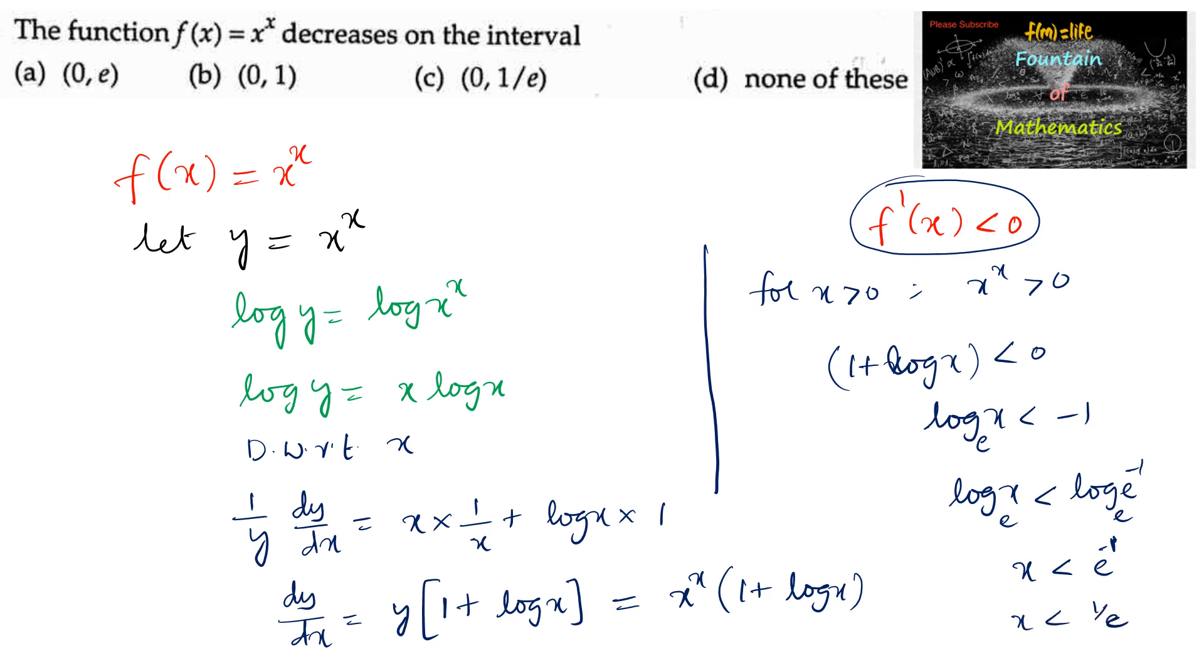So for the function to be decreasing, we consider 0 to 1/e. For x to be positive to define the logarithm, we can say x belongs to (0, 1/e). So we can go with option c.